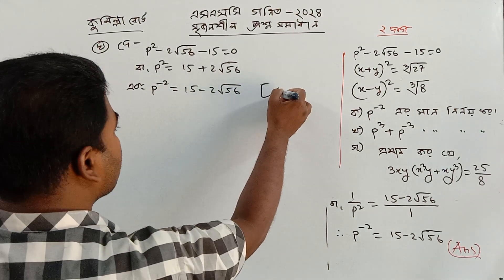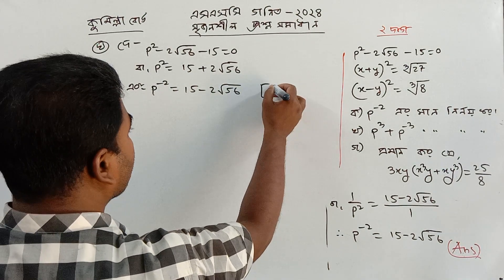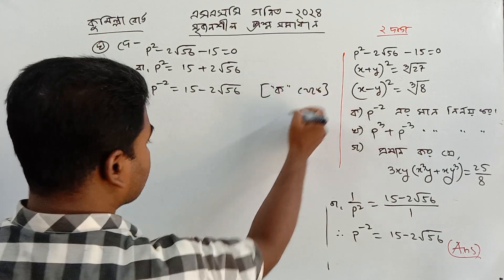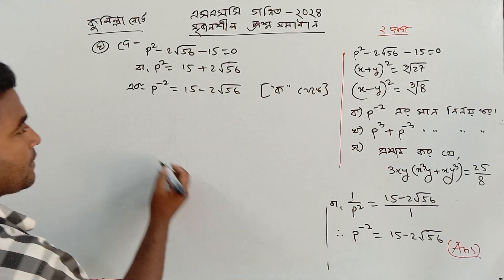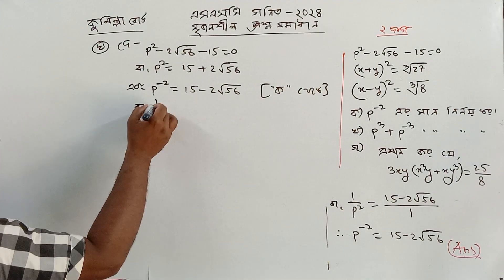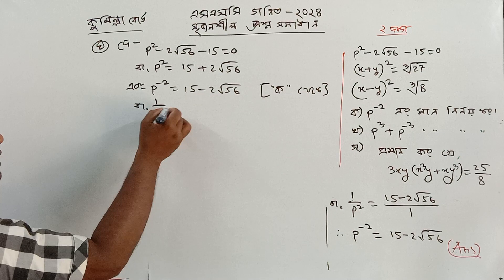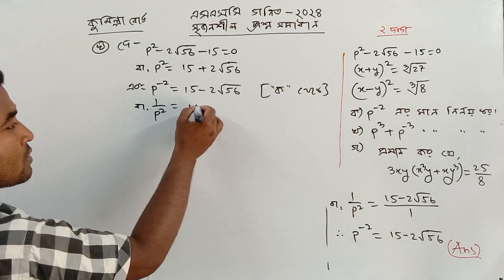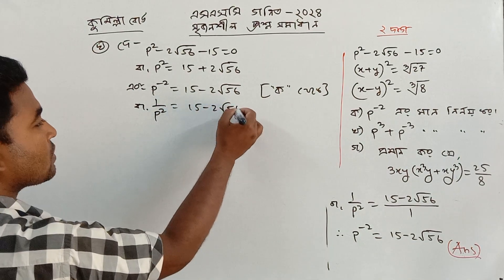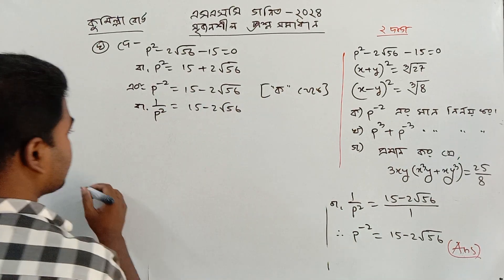Divided by p squared equal to 15 minus 26.